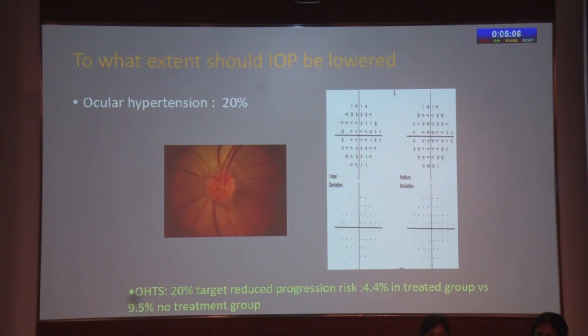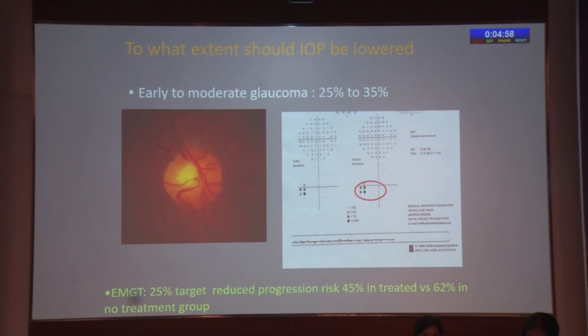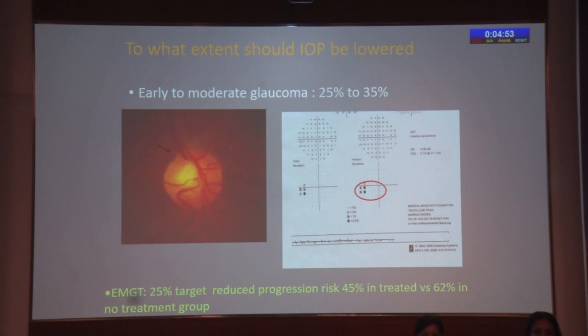The target IOP depends on the rate of progression, quality of life, and life expectancy. Baseline IOP can be obtained from patients' old records, and for patients already on treatment, from diurnal variation at the office or over 24 hours, especially for presumed normal tension glaucoma. The OHTS showed that at least a 20% targeted reduction in IOP reduced the risk of progression from 9.5% in the untreated group to 4.4% in the treated group. The Early Manifest Glaucoma Treatment Trial showed that at least a 25% drop in IOP reduced progression in 45% of the treated versus 62% in the no-treatment group.